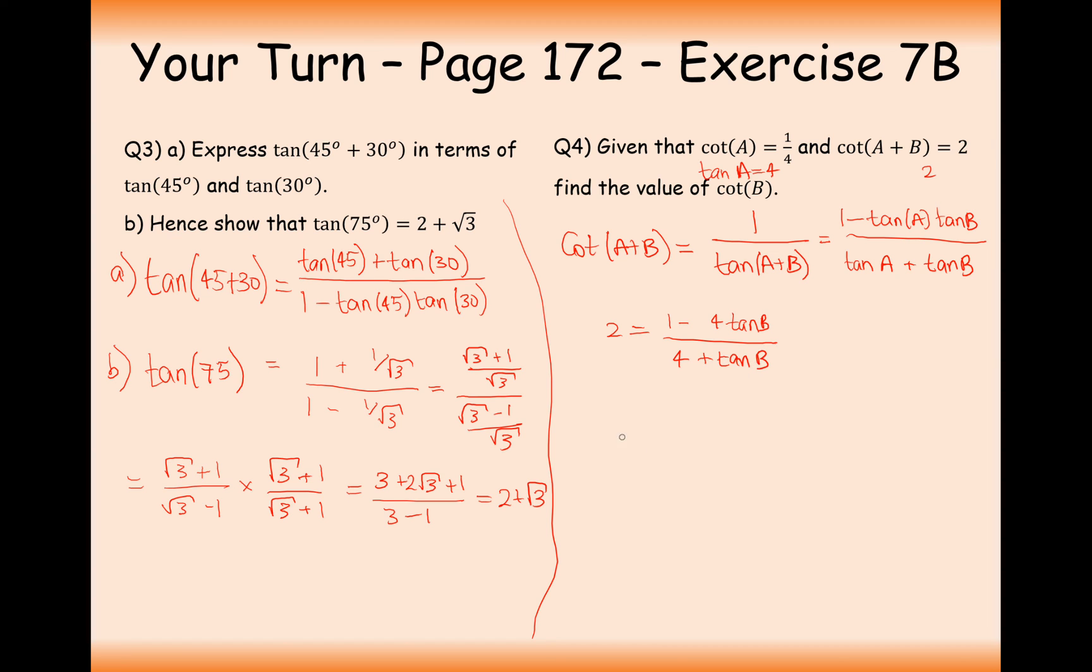So now we need to rearrange and simplify. Times it up to the other side. We get 8 plus 2 tan B equals 1 minus 4 tan B. And now if I add the tan B on to the other side, take the 8 on to the other side, I get 6 tan B equals minus 7. Divide through by 6 and I get minus 7 over 6. So what is the value of cot B? The value of cot B is minus 6 over 7.